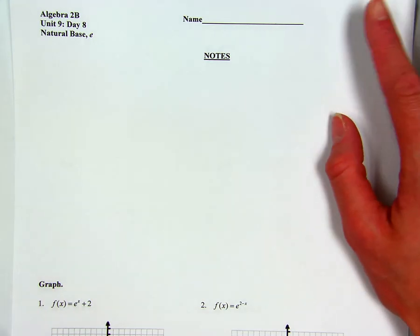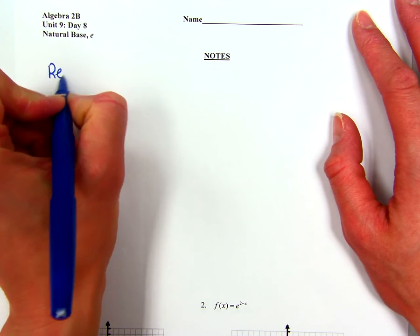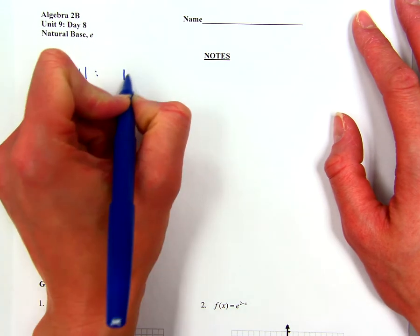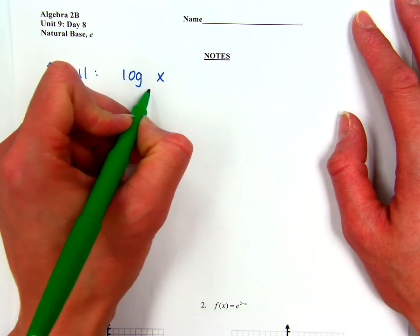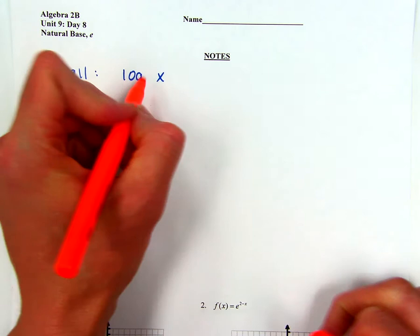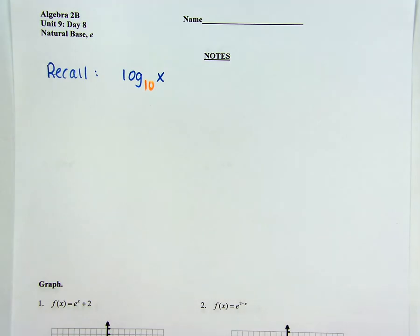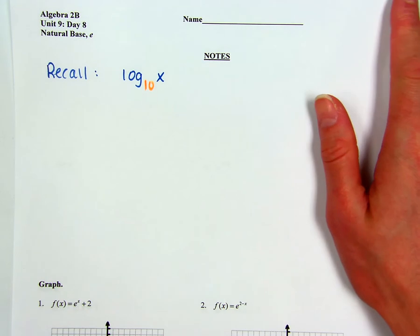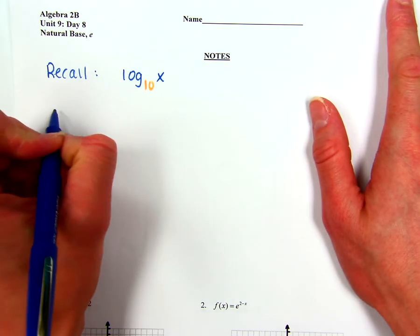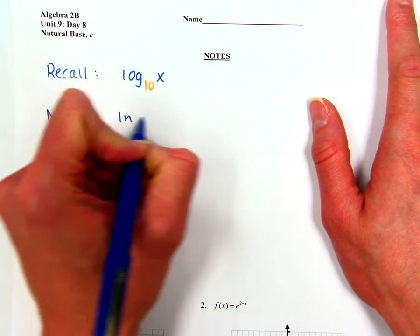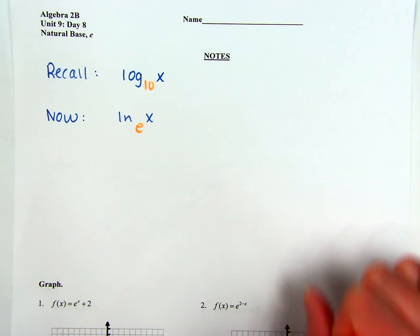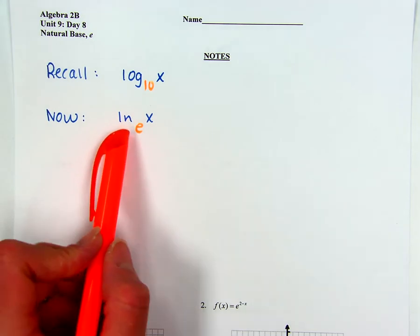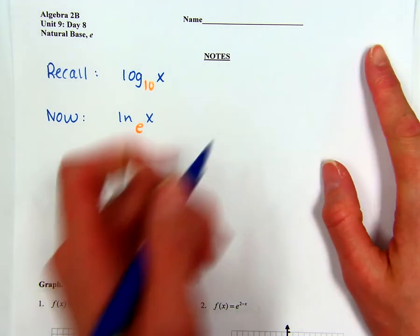Today we're going to talk about the natural base, which is base E. Remember that when you just see a log of something and you don't see a base, that base is base 10. This is the new stuff — when you see natural log of X, the implied base is actually E. And even though it's written LN, the way you say it is 'natural log.'